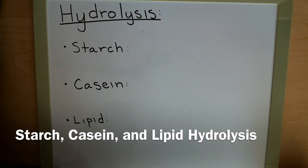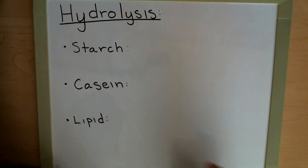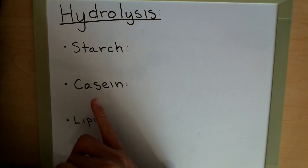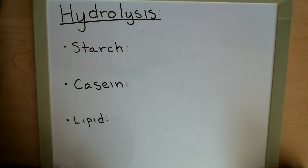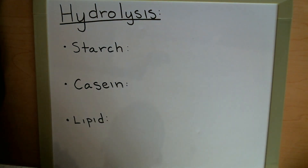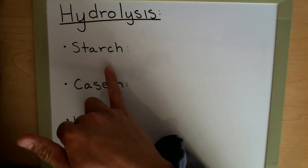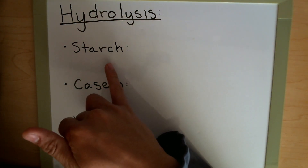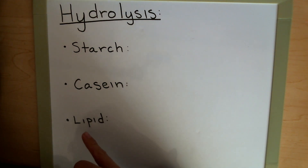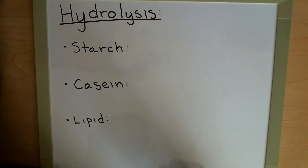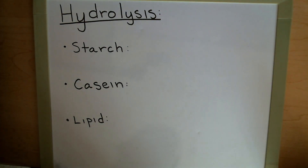In this video we're going to be taking a look at the breakdown of the major energy sources. We have starch, which is the complex form of sugar, casein specifically is the protein found in milk, and lipids for fat. For our starch hydrolysis we're going to be using a starch plate, casein where we have a milk agar, and lipid we're going to be using a tributyrin plate. So with that let's get started.